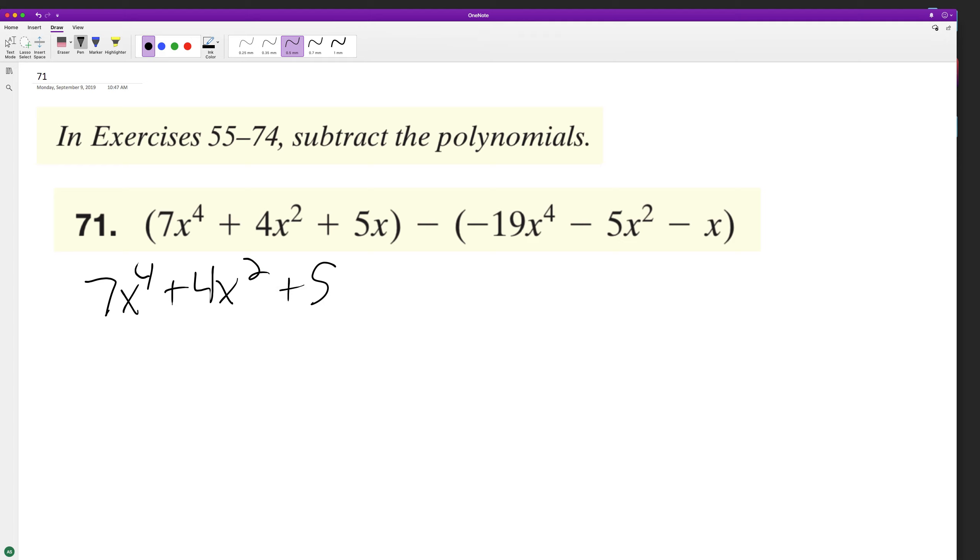Minus the negative is gonna be positive 19x to the fourth. Minus negative 5x squared is gonna be plus 5x squared, and then minus negative x gives us plus x. So we'll have now 7x to the fourth plus 19x to the fourth.